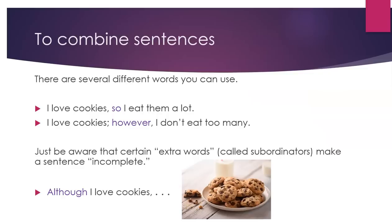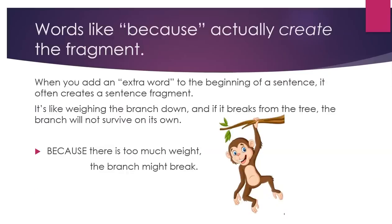To combine sentences, there are several different words you can use. For example: 'I love cookies, so I eat them a lot.' Or: 'I love cookies; however, I don't eat too many.' These words require different punctuation, which we won't cover right now. Just be aware that certain extra words, called subordinators, make a sentence incomplete. For example, 'Although I love cookies' sounds like something is missing. Words like 'because' actually create the fragment. When you add an extra word to the beginning of a sentence, it often creates a sentence fragment — like weighing the branch down, and if it breaks from the tree, the branch will not survive on its own.